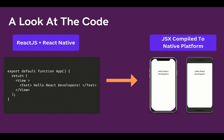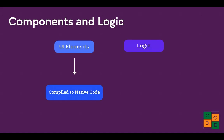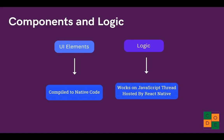Those components are compiled to native platforms. As a side note, it is just the views — the JSX and components — that are compiled in React Native, and not the actual JavaScript logic like if statements or helper functions. So only the views and JSX components are compiled to the native platform. But what about the JavaScript logic? The UI elements are compiled to native code, while the logic works on the JavaScript thread which is hosted by React Native. That's how it works.